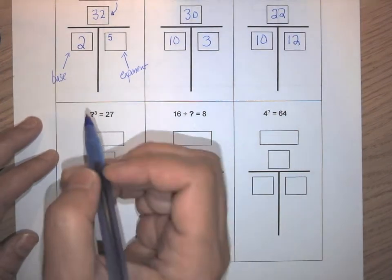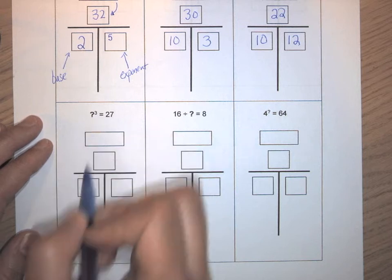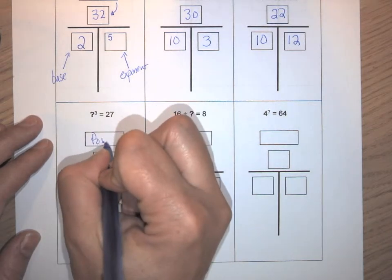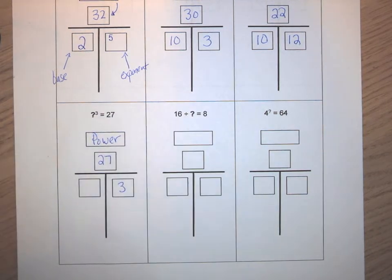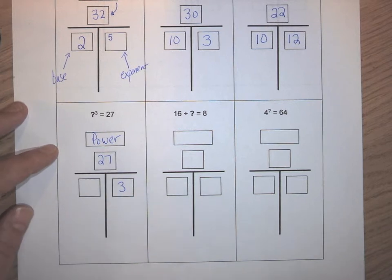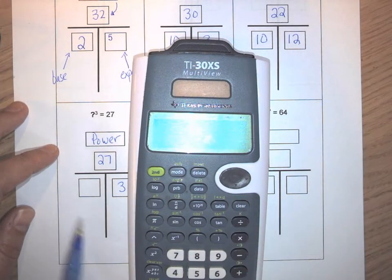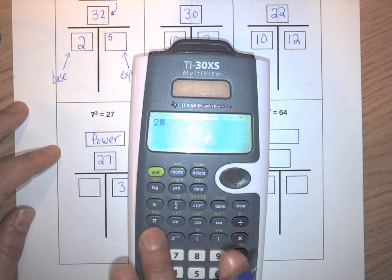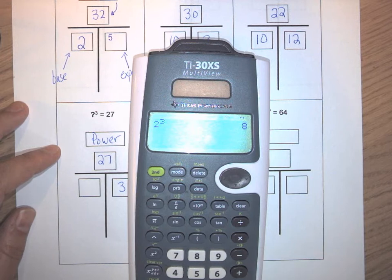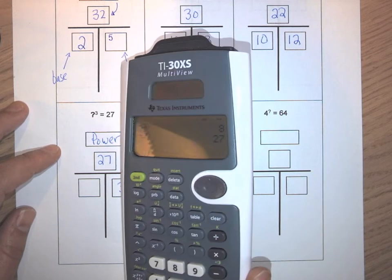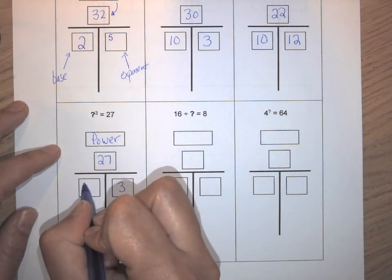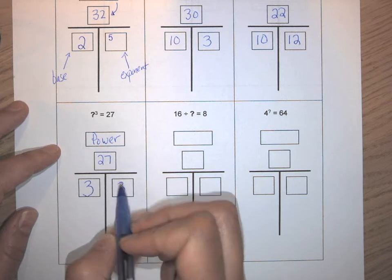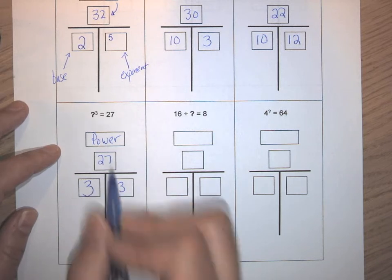We have another power relationship right here, and now it's the base that's missing. We have the exponent of 3 and the power 27. I can just try some different things — we already saw in the lecture that the third power of 2 is 8, so let's try 3. That does give us 27. Our base is 3, our exponent is also 3: 3 times 3 is 9, and 9 times 3 is 27.